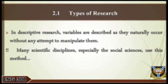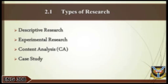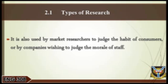In descriptive research, variables are described as they naturally occur without any attempt to manipulate them, and the relationships among the variables are also described. Many scientific disciplines, especially the soil sciences, use this method to obtain a general overview of the subject. It is useful where it is not possible to test and measure the large number of samples needed for more quantitative types of experimentation. Apart from being used to observe natural behaviors without affecting them, this type of research is also used by market researchers to judge the habits of consumers or by companies wishing to judge the morale of staff.